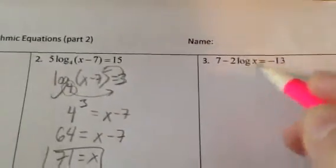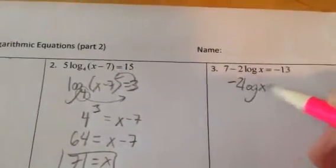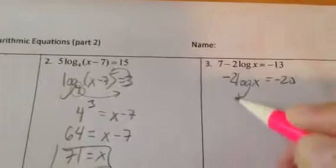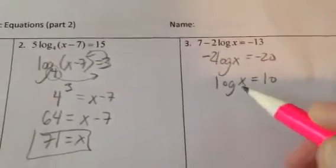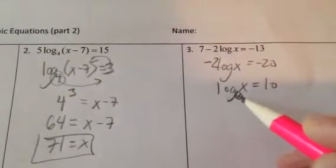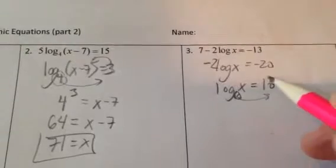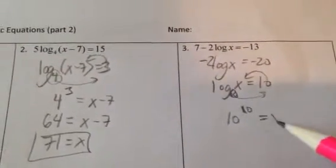So again, just kind of trying to get the log alone. Subtract the 7 first. So I'll have minus 2 log x equals minus 20. Divide by negative 2, I'll have log of x equals 10. Rewriting this in its exponential form. Remember when we're too lazy to write the base, the base is a 10. That's our common log. It's 10 to the 10 equals x.